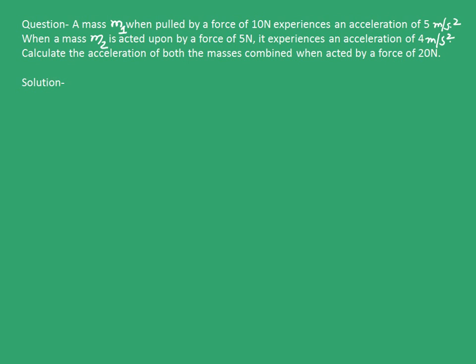Hello. Before moving forward, let's look at one more question. A mass M1, when pulled by a force of 10N, experiences an acceleration of 5 m/s². When a mass M2 is acted upon by a force of 5N, it experiences an acceleration of 4 m/s². Calculate the acceleration of both masses combined when acted by a force of 20N.